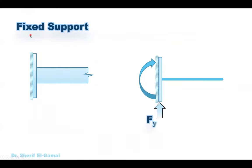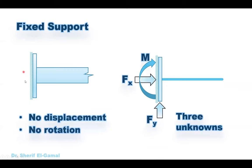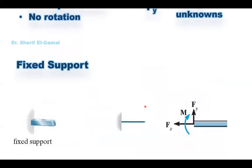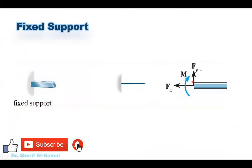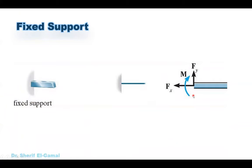The last type of support is the fixed support. The fixed support does not allow for any displacement or any rotation. Therefore in this case we have forces FX and FY and also we have a moment. Whenever you have a fixed support you know that you have three unknowns, and we must find all three unknowns to be able to analyze the structure, draw the shear and moment diagrams, and design the structure. This is showing the fixed support and how to draw it in the free body diagram with the three unknowns: FX, FY, and the moment.